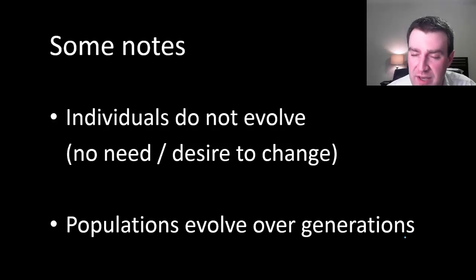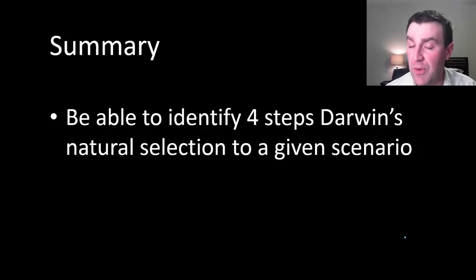Just some final notes. The biggest misconception we have among students is they want to say that individuals themselves change, which never happened in this scenario. There was never a bigger fish that told itself, uh-oh, I'm too big, I'd better evolve and become small so that I survive better. Fish were just either big or small as individuals, and they either survived better or they didn't. So the change was not among individuals. The change occurred in the overall population over many generations. What we want you to be able to do in summary is to be able to identify those four steps and also to be able to apply them to a given scenario, which we will practice more in class.